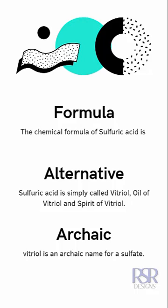Generally, vitriol is related to sulfates, but sulfuric acid is not a sulfate — it is an acid. However, its chemical formula resembles the structure of a sulfate, like SO4.